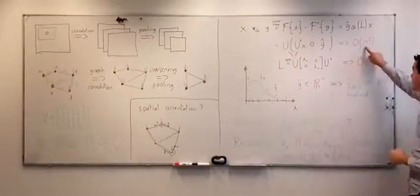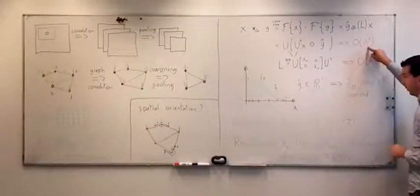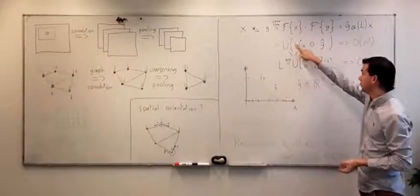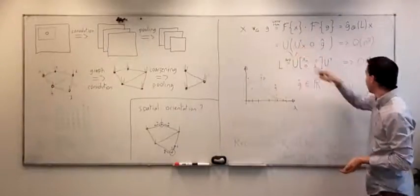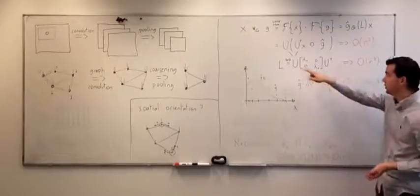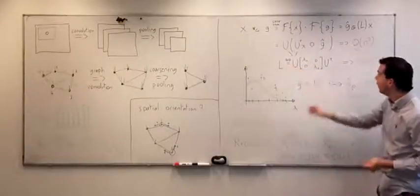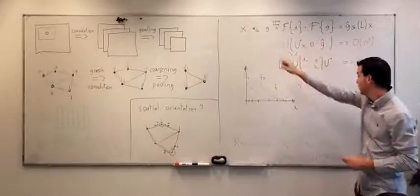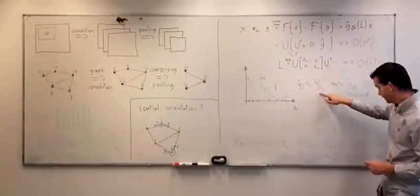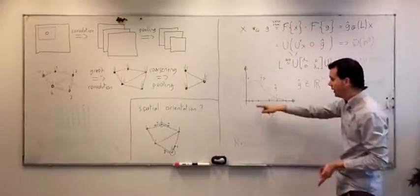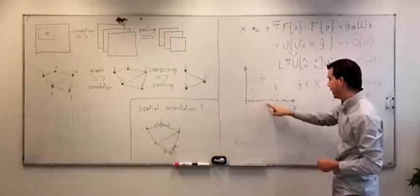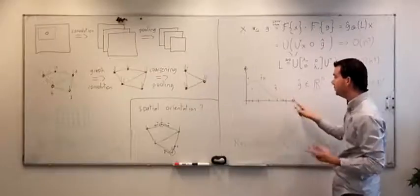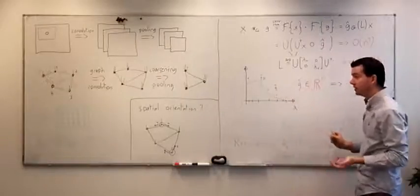The problem here is the n-squared computational cost, where n is the number of nodes, due to the multiplication by U — a matrix of size n by n — and the n-cubed computational cost of the singular value decomposition. Moreover, g-hat has the same size as the input, which is the number of nodes. In the spectral domain, discretized by the n eigenvalues, g-hat is completely free-form and not necessarily smooth, meaning it is not localized in the vertex domain.